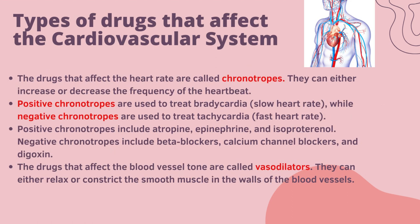Drugs that affect the heart rate are called chronotropes, which can either increase or decrease the frequency of the heartbeat. Positive chronotropes are used to treat bradycardia (slow heart rate), while negative chronotropes are used to treat tachycardia (fast heart rate). Positive chronotropes include atropine, epinephrine and isoproterenol. Negative chronotropes include beta blockers, calcium channel blockers and digoxin.